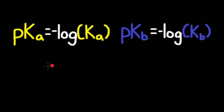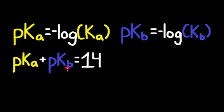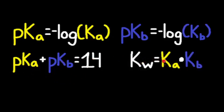Also, pKa plus pKb is equal to 14, and you should notice that this formula is similar to pH plus pOH is equal to 14, so this is nothing new. As well, Kw is equal to Ka multiplied by Kb — instead of H₃O⁺ multiplied by OH⁻, we now have Ka multiplied by Kb.